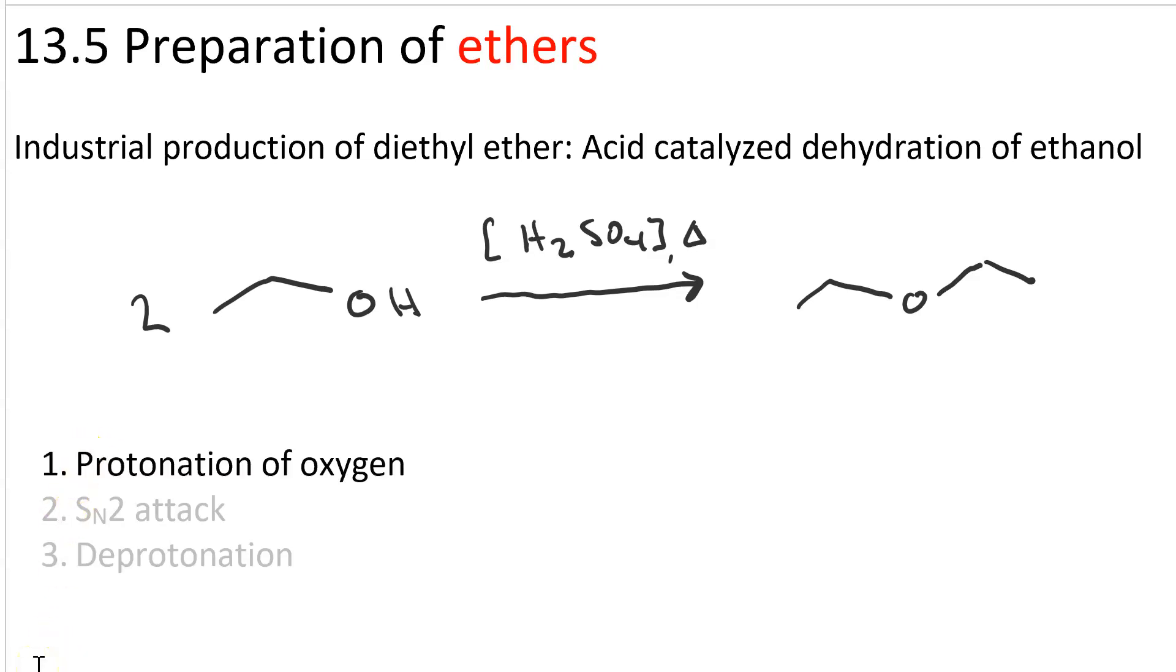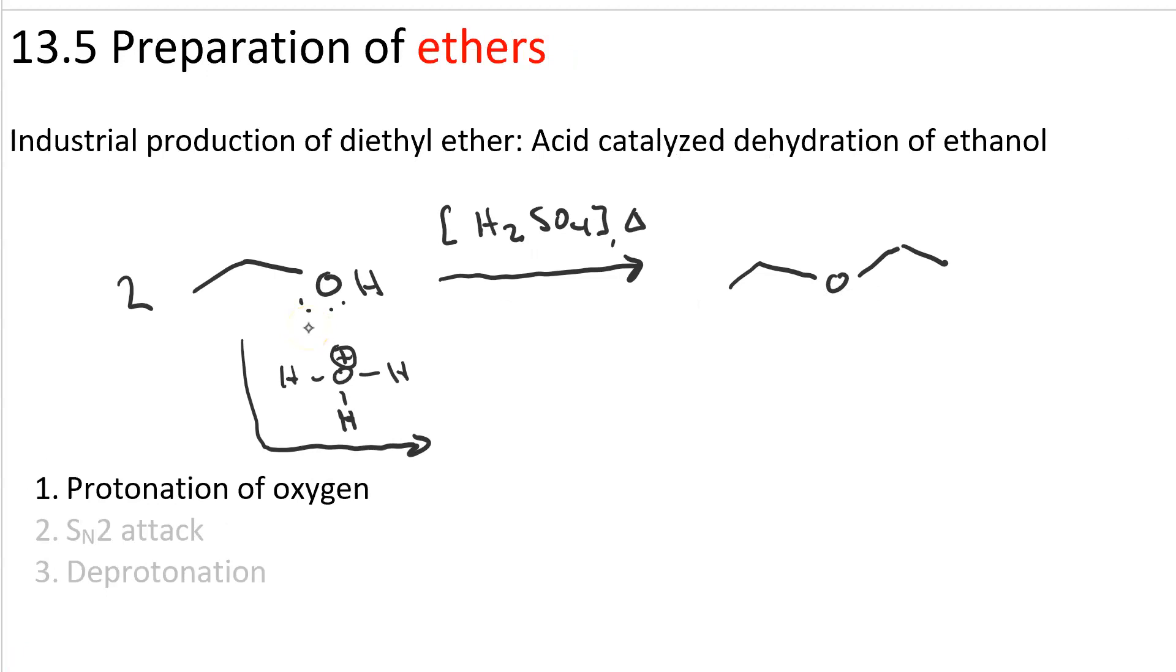In the first step, the alcohol oxygen is protonated to make an oxonium. So that's just your usual proton transfer. The proton source is hydronium, which is present in large proportion in concentrated acid. And what we've done is create this oxonium, or water, which is a good leaving group.